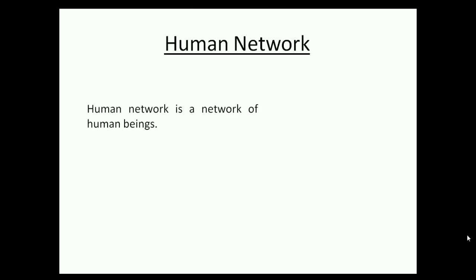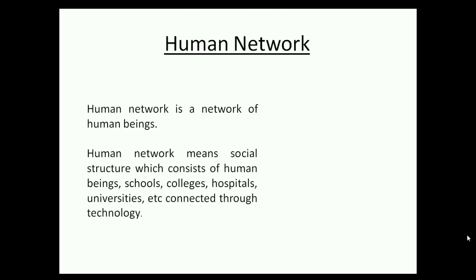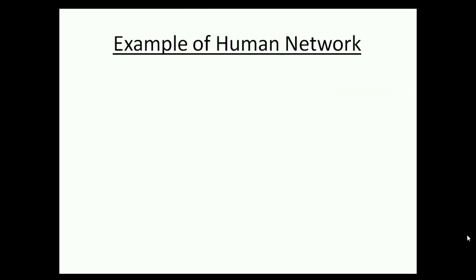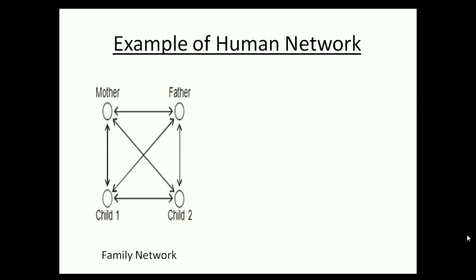A human network is one of the best examples of a network. A human network is a network of human beings — a social structure consisting of human beings, schools, colleges, hospitals, universities, etc., connected through technology. In this case, human beings act as nodes, and the links between nodes are of different types such as mobile, audio links, emails, roads, emotions, and relations.